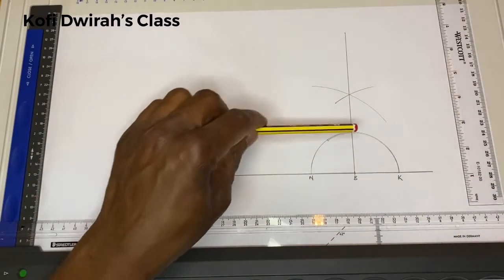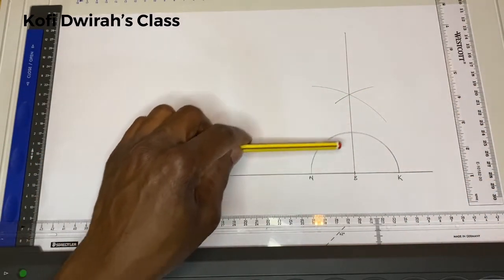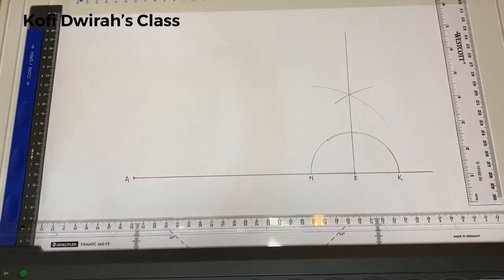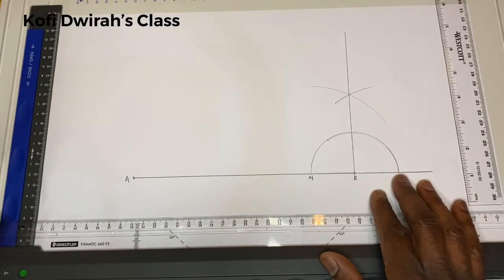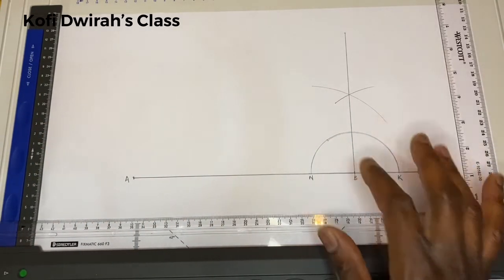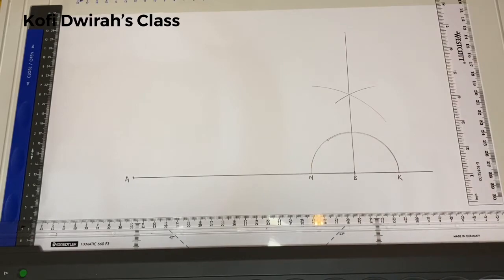So now we have this angle as 90 degrees. We will bisect the 90 degrees angle to get our 45 degree angle.